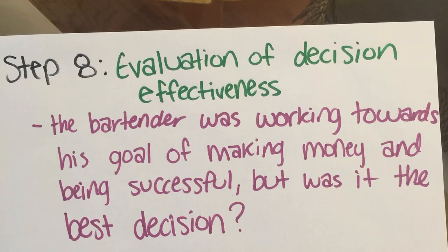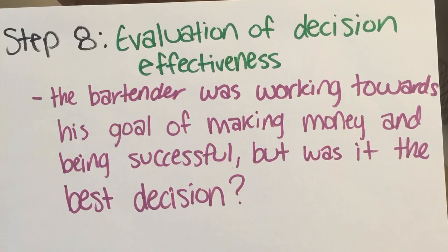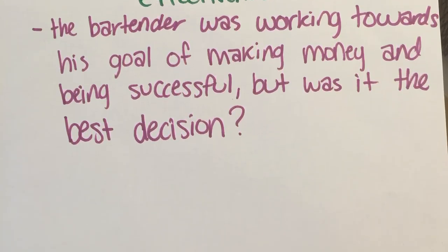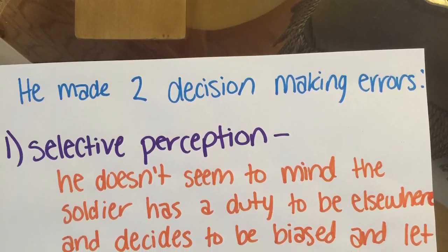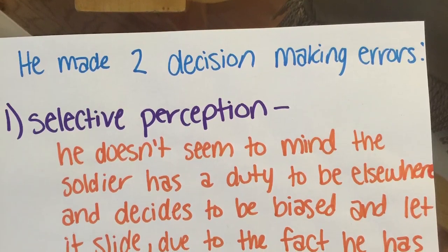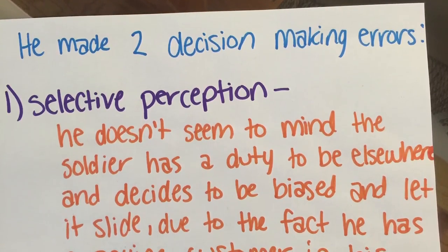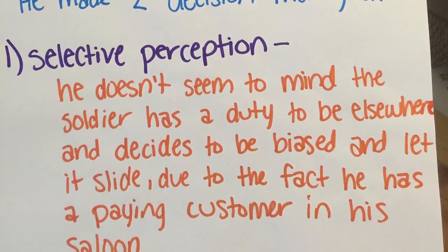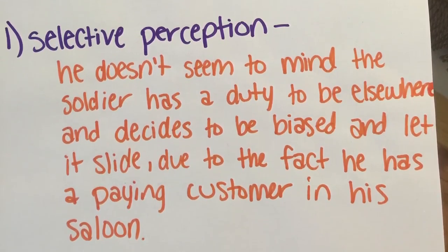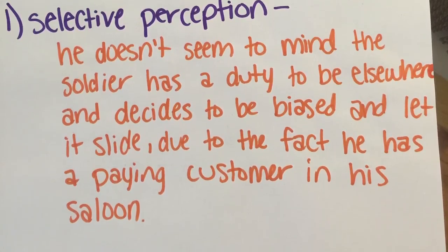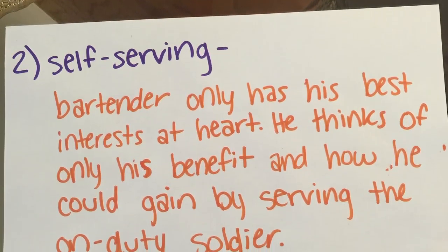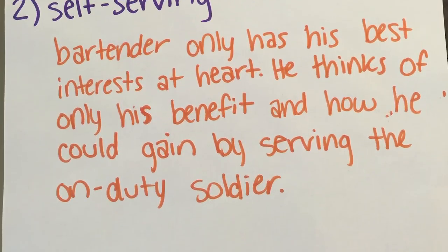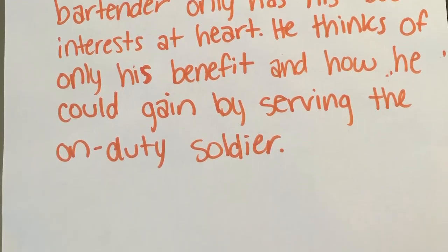Step 8: Evaluation of decision effectiveness. The bartender was working towards his goal of making money and being successful, but was it the best decision? He made two decision-making errors. First, he had selective perception — he doesn't seem to mind that the soldier has a duty to be elsewhere, and decides to be biased and let it slide because he was a paying customer. Second, he was self-serving: the bartender only has his best interest at heart, thinking only of his benefit and how he could gain by serving the on-duty soldier.